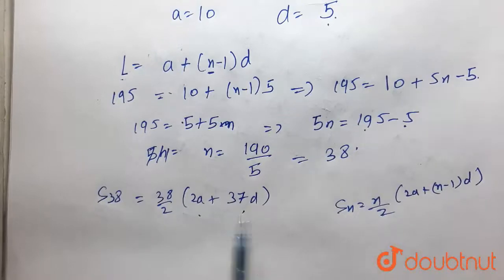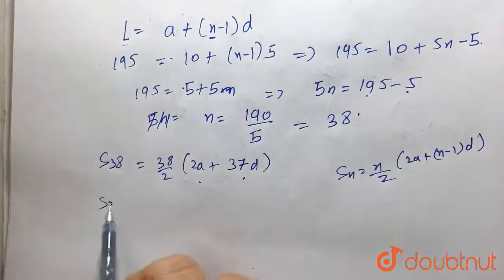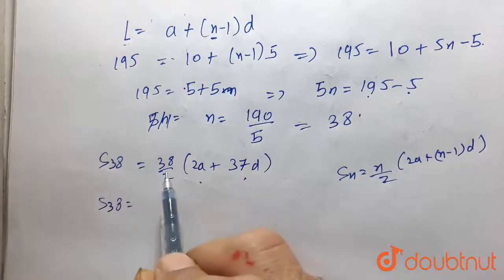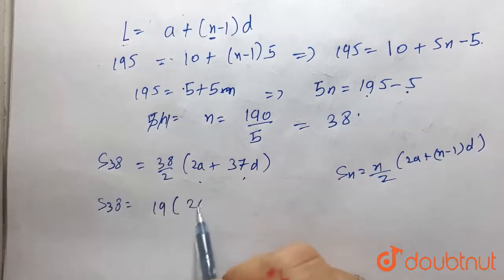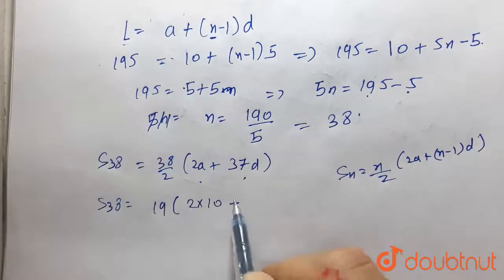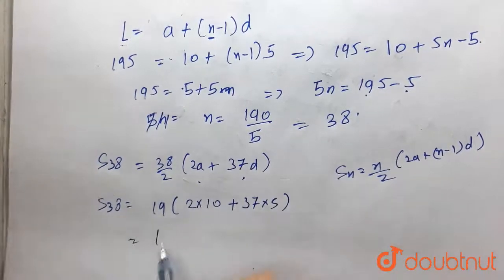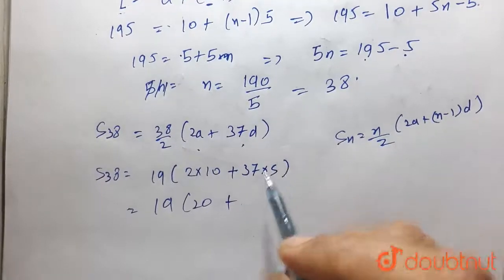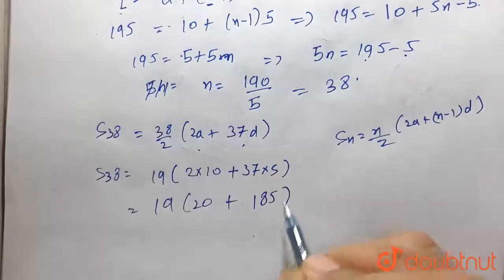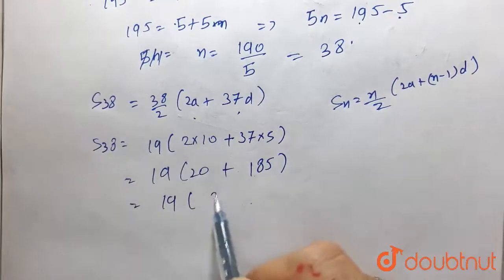Putting the value of a and d, that is 10 and 5, S38 is equal to 38 by 2, which becomes 19, times 2 into 10 plus 37 into 5. By solving this, this becomes 19 times 20 plus 185, which is equal to 19 into 205.